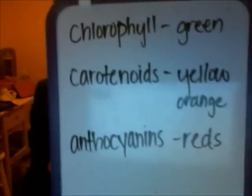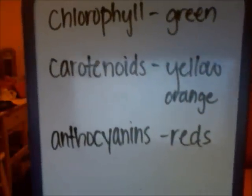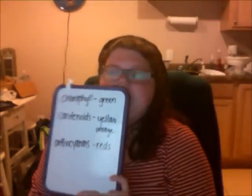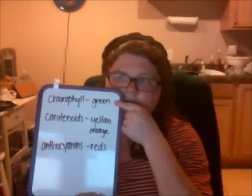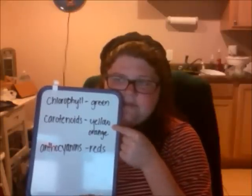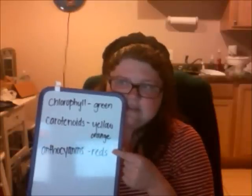That was a very silly demonstration, but maybe you'll remember it. So, that being said: chlorophyll — green; carotenoids — yellow and orange; and anthocyanins — reds. That just has to do with the light spectrum and absorption and reflection. Chlorophyll can absorb anything but green, therefore we see green. Carotenoids can absorb anything but yellow and orange, therefore we see yellow or orange. And anthocyanins can absorb anything but red, so we see red. That's how that works.